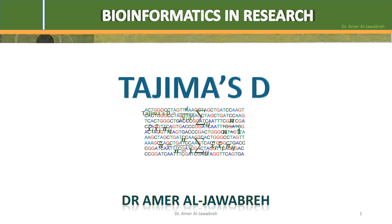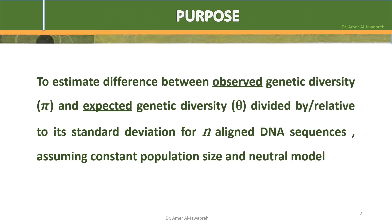Tajima's D. Purpose: to estimate difference between observed genetic diversity pi and expected genetic diversity theta divided by or relative to its standard deviation for N-aligned DNA sequences, assuming constant population size and neutral model.